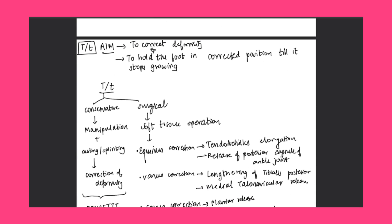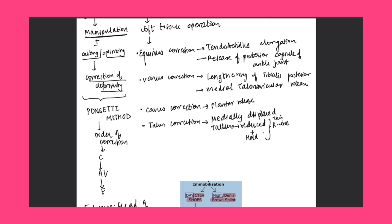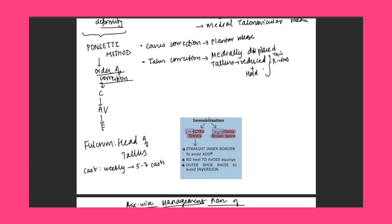Treatment: the aim is to correct the deformity and to hold the foot in the corrected position until it stops growing. Conservative treatment includes the famous Ponseti method, in which we do manipulation plus casting or splinting to achieve correction. The order of correction in Ponseti method follows CAVE — cavus first, then adduction, then varus, then equinus. The fulcrum used is the head of the talus. The cast is replaced every week and approximately five to seven casts are applied.